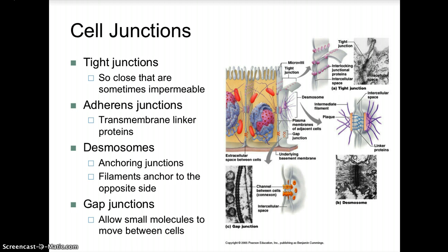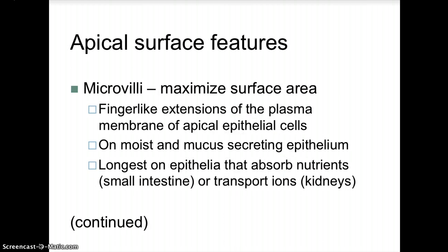Gap junctions allow small molecules to move between cells. Apical surface features include microvilli, which are used to maximize surface area. They are finger-like extensions of the plasma membrane of apical epithelial cells on moist and mucus-secreting epithelial, and on epithelial that absorb nutrients such as the small intestines or transport ions such as found in the kidney.